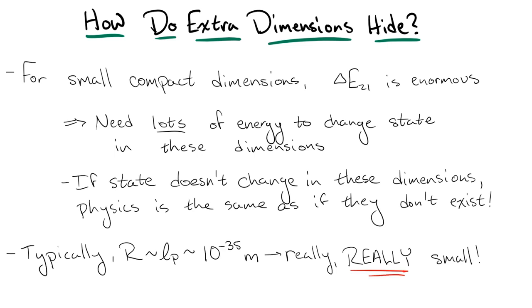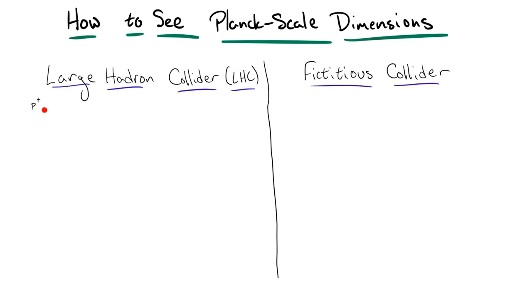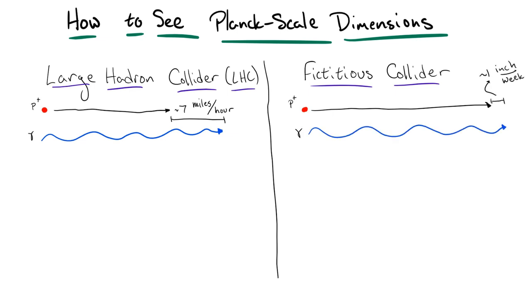This means that if we wanted to probe these extra dimensions with, say, a proton, this proton would need a momentum of about 10 to the 19 giga electron volts. Let's put this into perspective. The Large Hadron Collider, or LHC, at CERN is the largest particle accelerator on Earth. In non-particle physics terms, this machine is able to accelerate protons to just about 7 miles per hour short of the speed of light. If these Planck scale extra dimensions exist, we would need an accelerator that would fire protons at about an inch per week less than the speed of light to see them. In other words, if this accelerator shot a proton parallel to a beam of light, after an entire week the light would be just over an inch ahead of the proton.